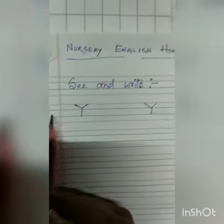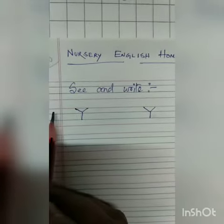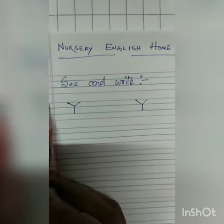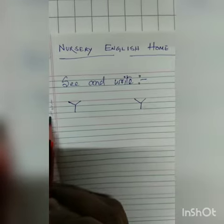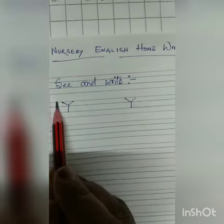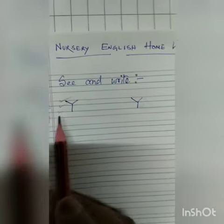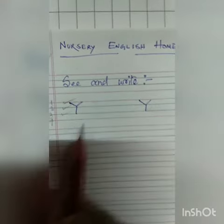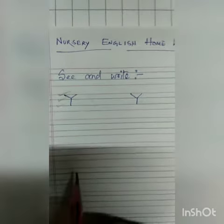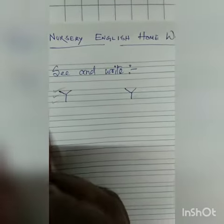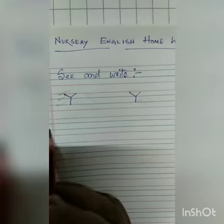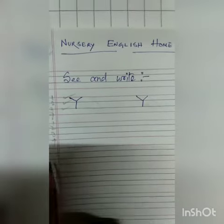You have to follow the lines and maintain the lines. There are four lines in English copies. You have to write on the first line, second line, third line, and fourth line — capital letter Y.